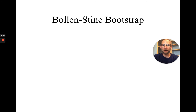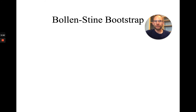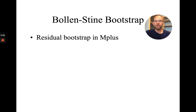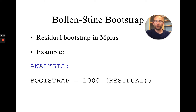Another option in Mplus is the so-called Bollen-Stine bootstrap method. In the Bollen-Stine bootstrap, you're not making an adjustment to your estimator — instead you're bootstrapping your fit statistics and standard errors. This is called the residual bootstrap in Mplus. To specify it, in your Mplus input you would write: analysis, bootstrap equals the number of bootstrap samples you want to draw — in this case 1000 — and then in parentheses you would put residual. The residual bootstrap in Mplus is the Bollen-Stine bootstrap, and it's another way to make adjustments for non-normality.